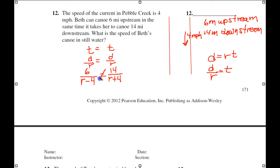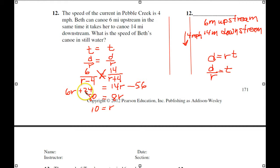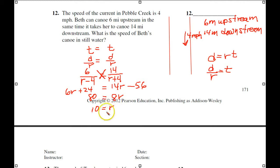Cross-multiplying gives 6R plus 24 equals 14R minus 56. Keeping R's positive by transposing: 8R equals 80, divide both sides by 8, R equals 10. That's the speed of Beth's canoe in still water, and it checks out.